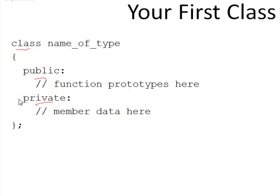If you look at this syntax, you see that it's very much like a struct. In fact, if you were to get rid of the public and private keywords and replace the keyword class with struct, it would be exactly the same. You are indeed defining a new class of objects in your language. There are two different sections in a class: the public and the private.